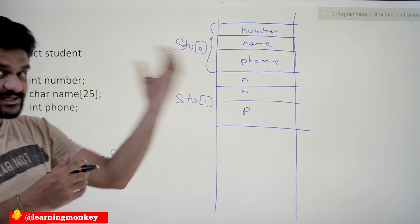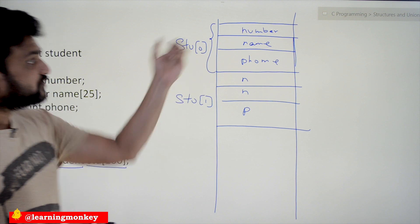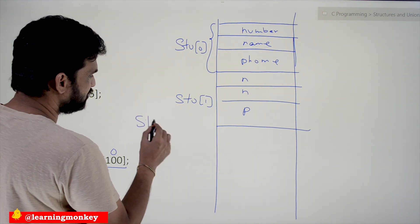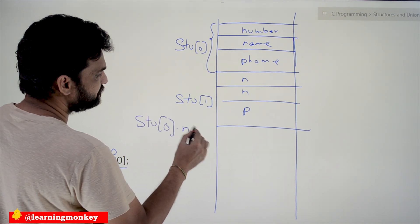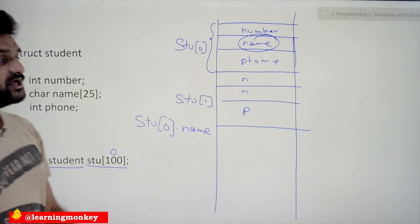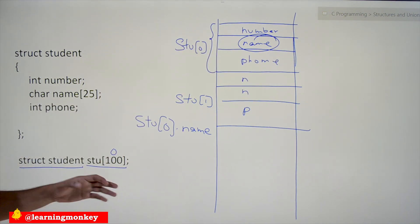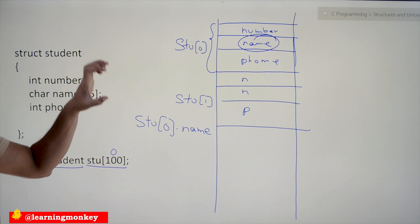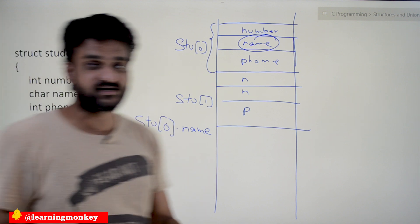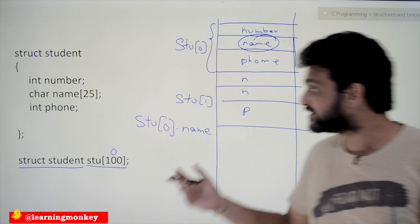As we know, the dot operator is used to access member variables of a structure. So to access stu[0]'s name, we write stu[0].name — this accesses that value and it will get printed. For example, if the name stored is 'Vikram', then 'Vikram' will be printed. This is almost like creating a database for students — within the program execution we can store the details of a hundred students.